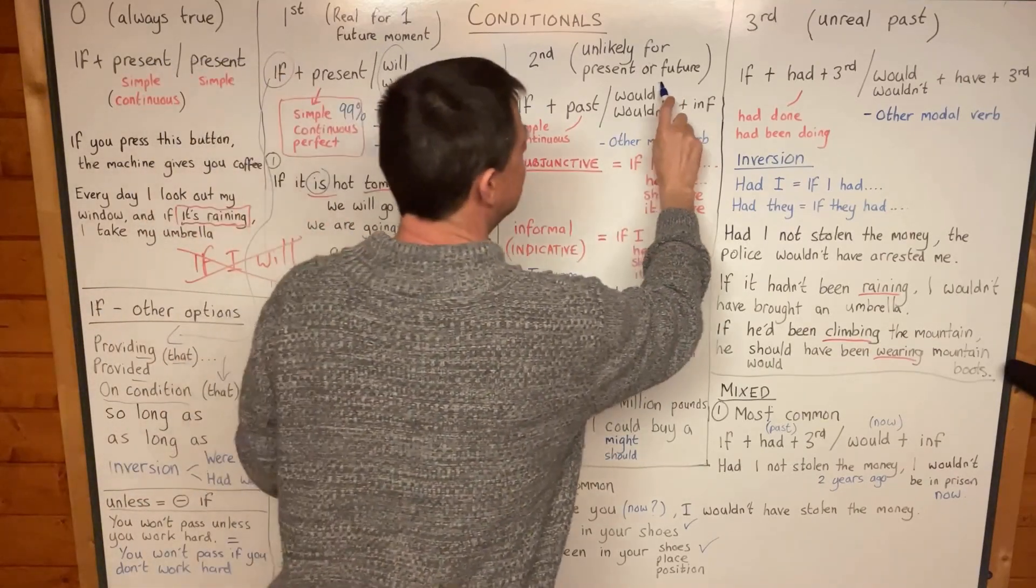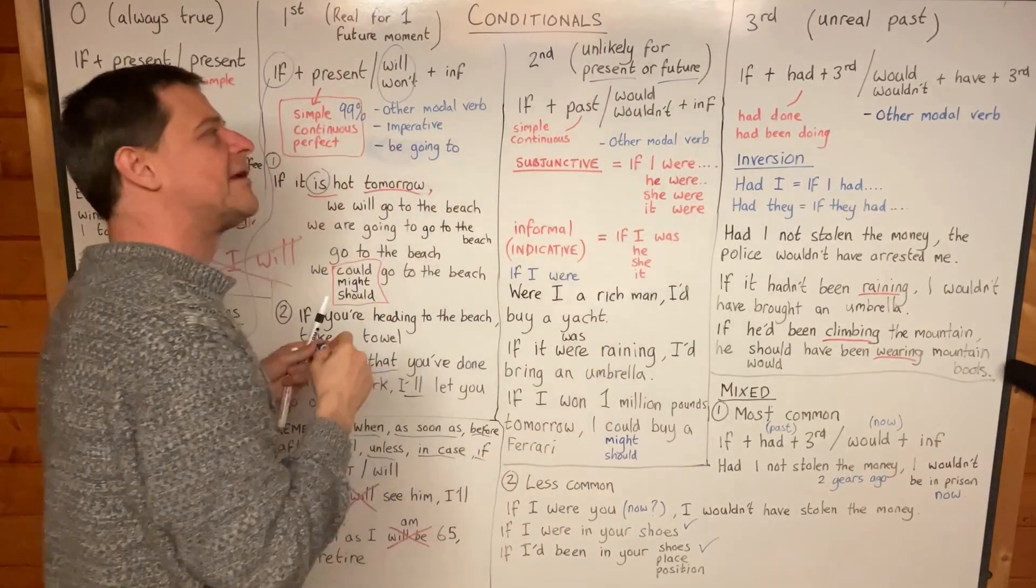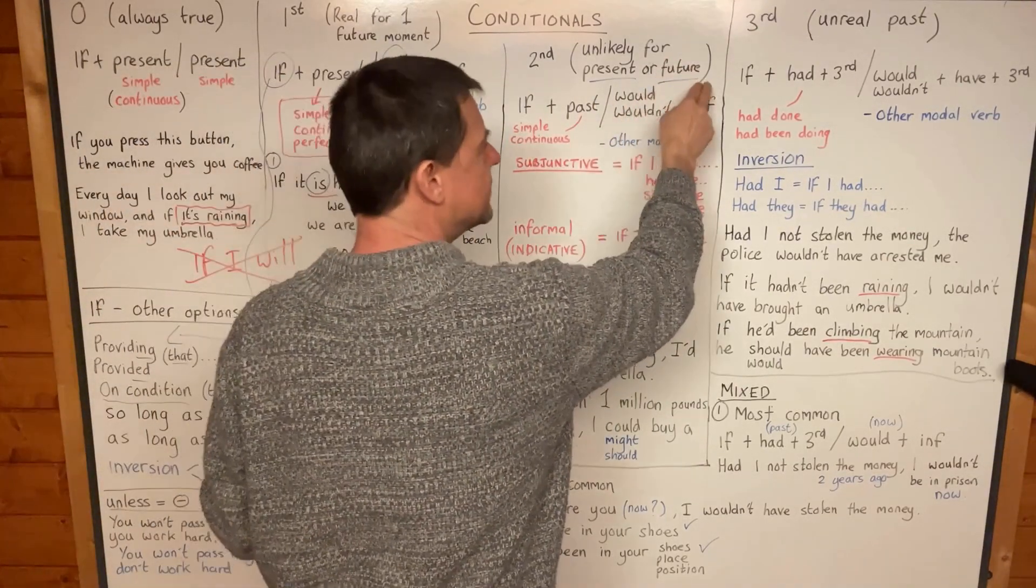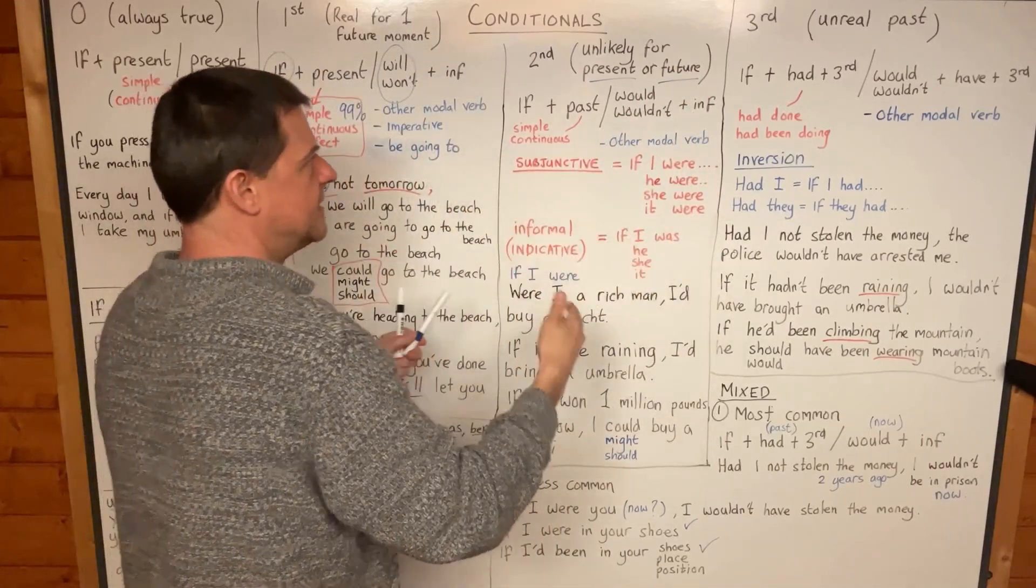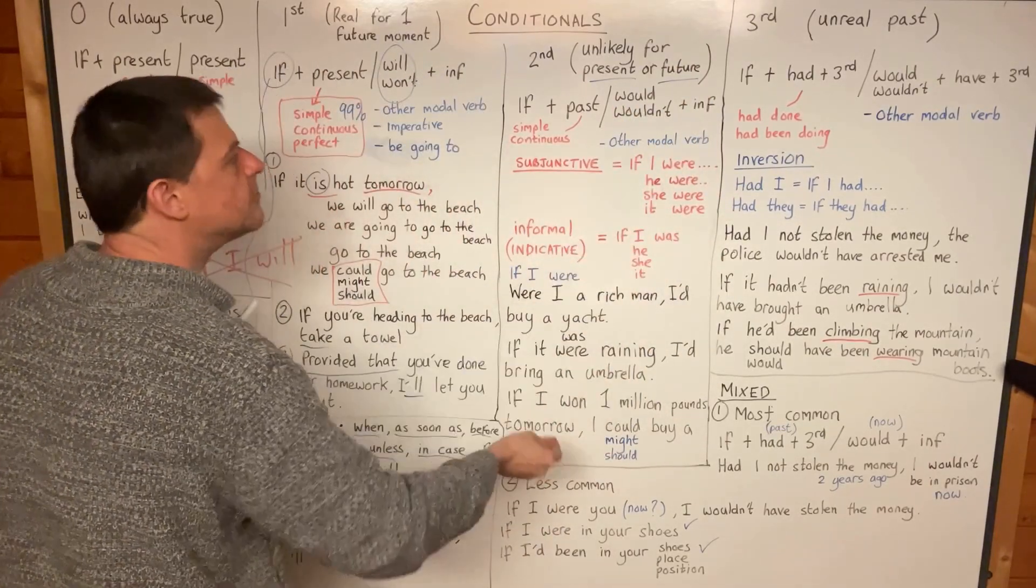So second conditional is for unlikely present or future, and I want to stress that because a lot of students think it's just for unlikely present. They don't realize it's for the future as well. It's for either, okay? And I'll give you some examples to show you that.